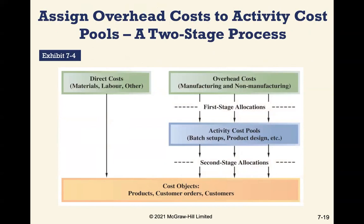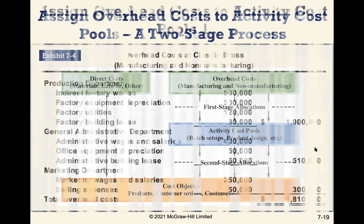Activity-based costing assigns overhead costs to cost pools using a two-stage process. In the first stage, we identify direct costs such as materials, labor, and other items, as well as manufacturing and non-manufacturing overhead costs, and allocate them to activity cost pools. The second stage allocations then assign these pool costs — such as batch setups, product design, and others — to cost objects.